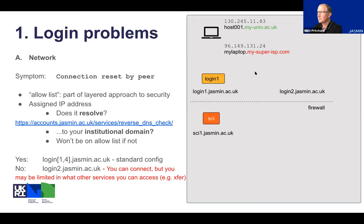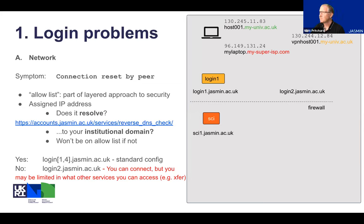One thing you can do to mitigate this is to use a VPN if your institution provides one. Connecting via VPN assigns you an IP address belonging to that trusted network, which should also resolve to a hostname that can be checked against the allow list. We recommend connecting from your institutional network wherever possible.